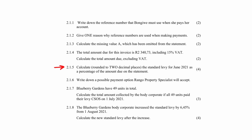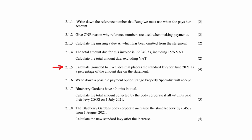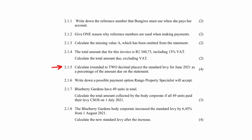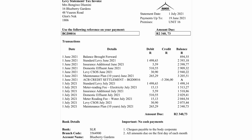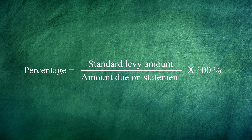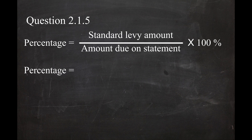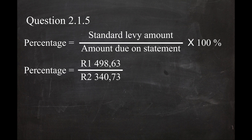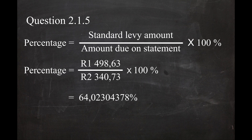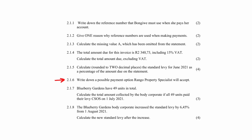In Question 2.1.5, you have to calculate the standard levy for June as a percentage of the amount due on the statement, rounded to two decimal places. The standard levy for June is R1498.63 and the amount due is R2340.73. The percentage equals R1498.63 divided by R2340.73, multiplied by 100%, and rounding to two decimal places gives you 64.02%.